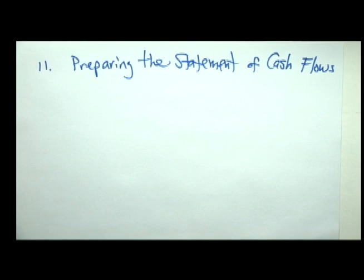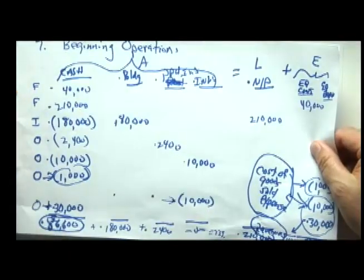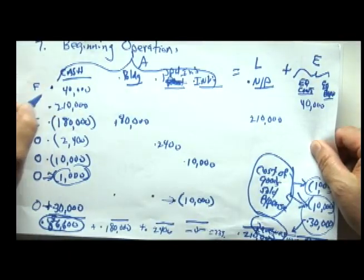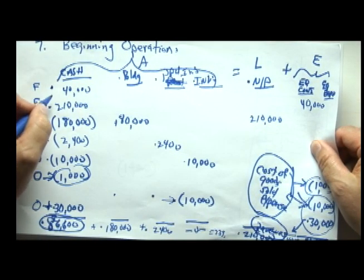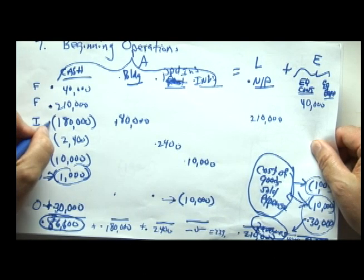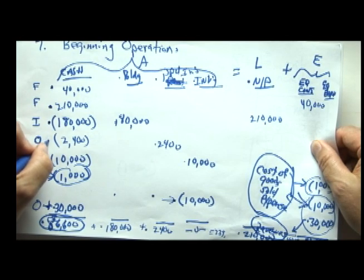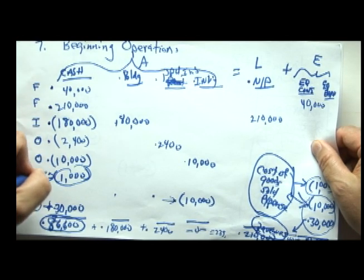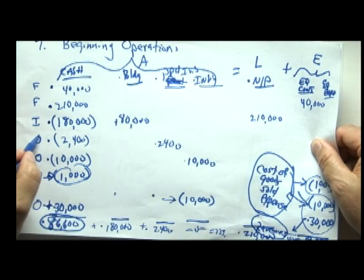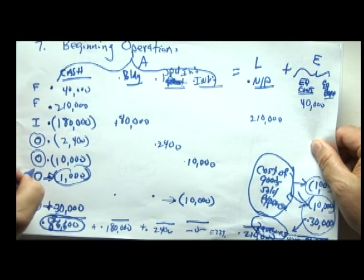Recall from video 7 when we learned about the company when it started operations. Let's go back to video 7 and remember, the company started operations by putting $40,000 in the business. It then borrowed $210,000, invested $180,000 in a building, and incurred three startup costs on a short-term basis. We called these items operating changes in cash.